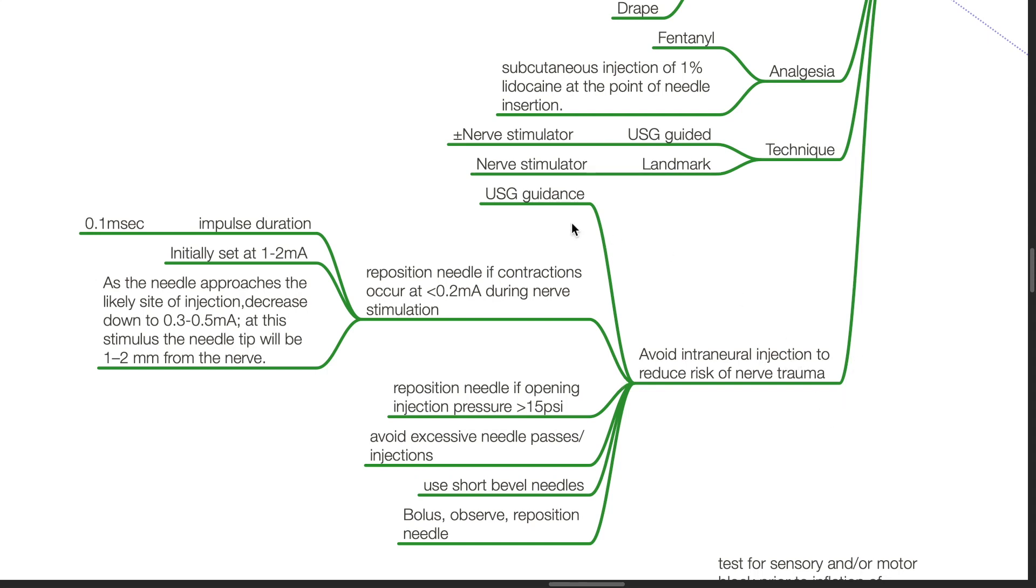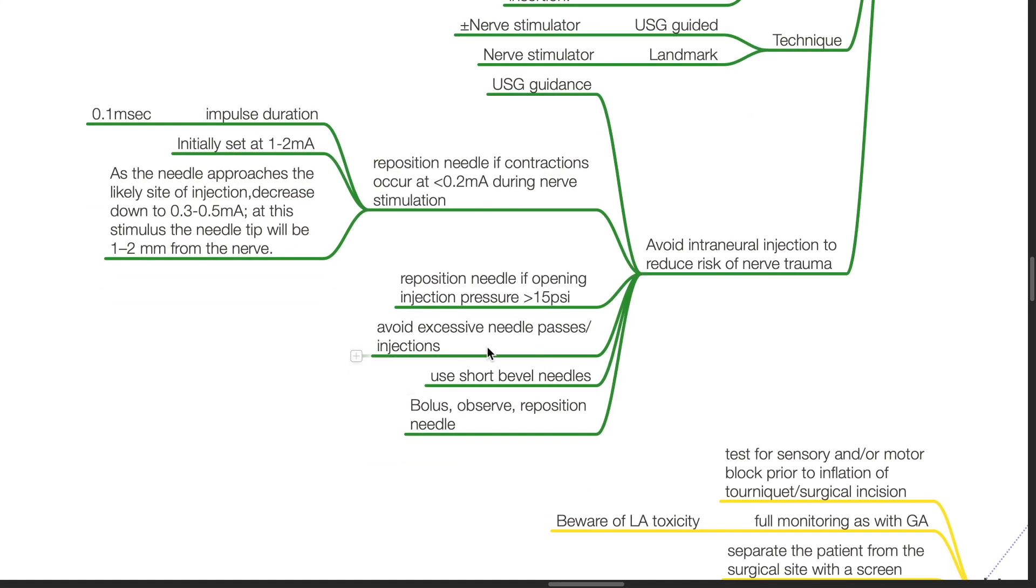Using ultrasound guidance, reposition the needle if contractions occur at less than 0.2 milliamps during nerve stimulation. Impulse duration should be 0.1 millisecond. Set at 1 to 2 milliamps initially. As the needle approaches the likely site of injection, decrease down to 0.3 to 0.5 milliamps. At this stimulus, the needle tip will be 1 to 2 millimeters from the nerve. Reposition the needle if opening injection pressure is more than 15 psi. Avoid excessive needle passes or injections. Use short bevel needles. Bolus, observe, and reposition needle.